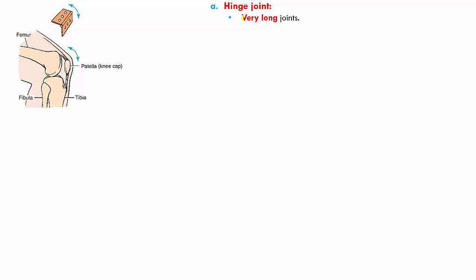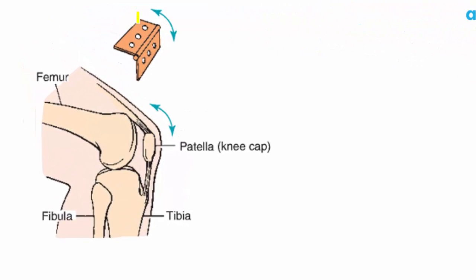First is the hinge joint. It allows back and forth movement of that particular joint. Examples are your knees and elbows. This kind of hinge is present in your doors and moves only in one direction — the door can only open one way, it cannot back fold. Same way, you cannot back fold your knees or elbows; they can only move forward and back, not 360 degrees. So only back and forth movement is possible with the hinge joint.